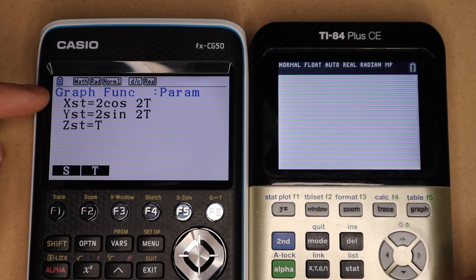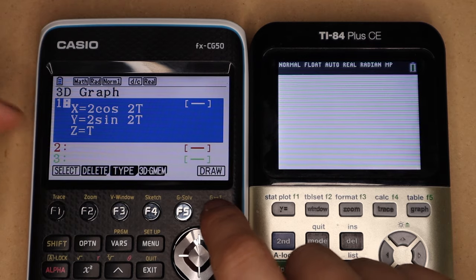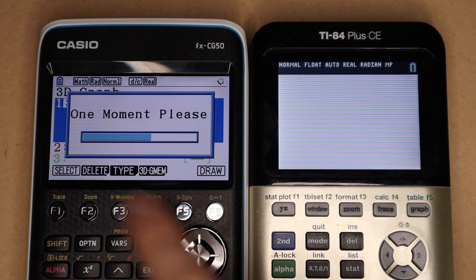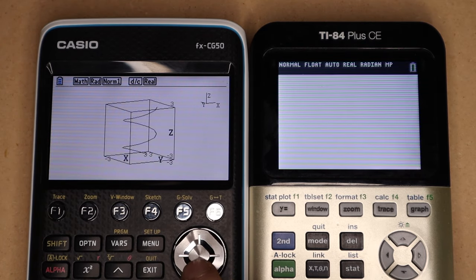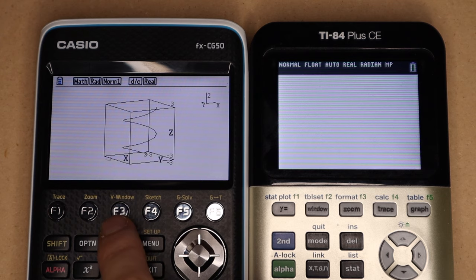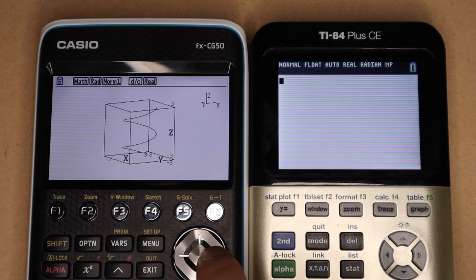So here, for example, is a parametric function. This is a simple helix, and you click Draw, and it'll take a second to load, and then you'll get this box with a window that you can set.